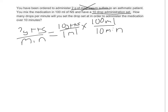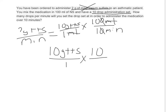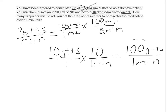Now we cancel out. We have drops per minute on the left, and we want drops per minute on the right. We cross off milliliters — milliliters on top, milliliters on the bottom. Then we look at the zeros: a zero here and a zero here. That leaves us with 10 drops over 1 times 10 over 1 minute, which equals 10 times 10 = 100 drops per minute.